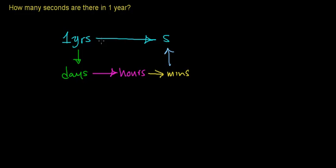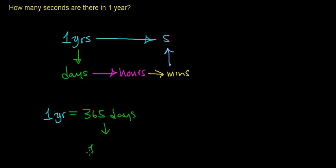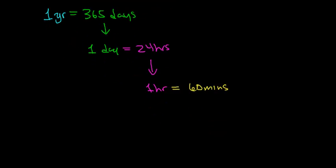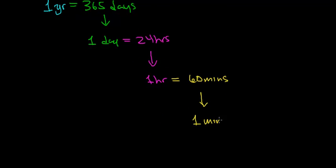To convert from years over to seconds we need to know the unit relationships between years and days, days and hours, hours and minutes, and minutes and seconds. You already know that one year has 365 days, one day has 24 hours, one hour has 60 minutes, and one minute has 60 seconds.